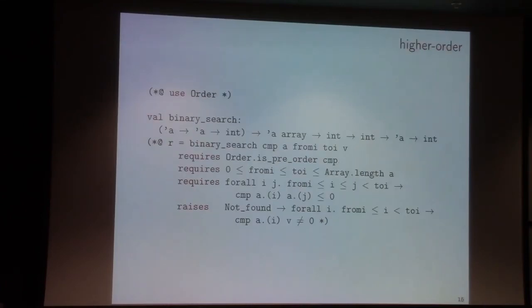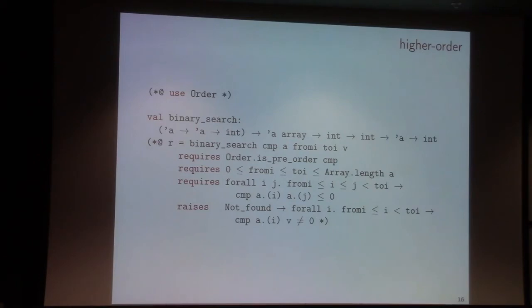Now, higher-order. This is where we have some manifestation of higher-order in our specification language. For example, this pre-order predicate comes from an external model called "order." Another example is using a compare function for binary search — it's the first argument of my binary search function. Here this pre-order takes the CMP function as argument, so we can say it's second-order. But I believe it's still simple for a human to understand what's happening.